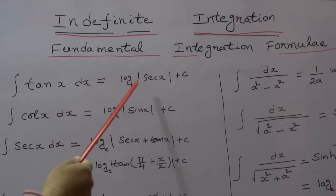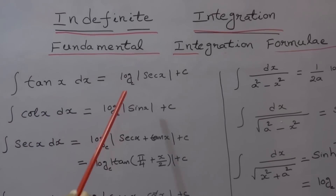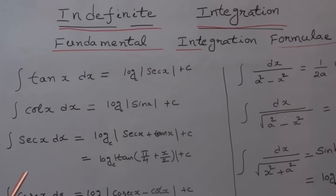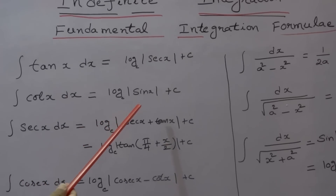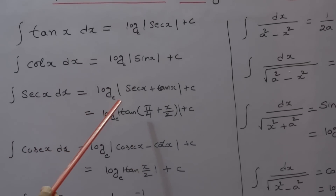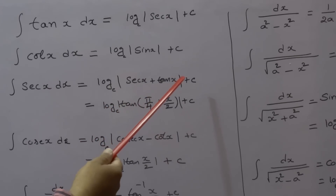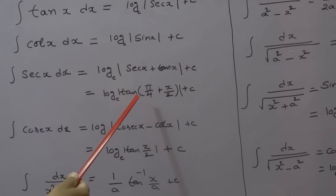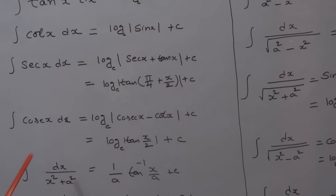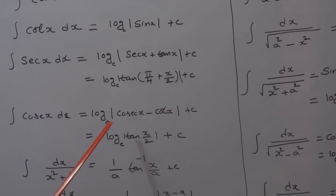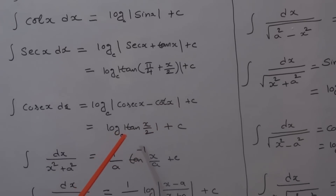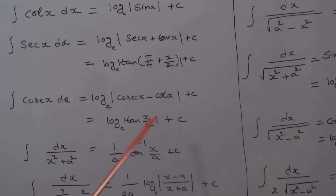Integral of tan x dx is equal to log of modulus of sec x plus c. Integral of cot x dx is equal to log of modulus of sin x plus c. Integral of sec x dx is equal to log of |sec x + tan x| plus c, or log of |tan(π/4 + x/2)| plus c. Integral of cosec x dx is equal to log of |cosec x minus cot x| plus c, or log of |tan(x/2)| plus c.